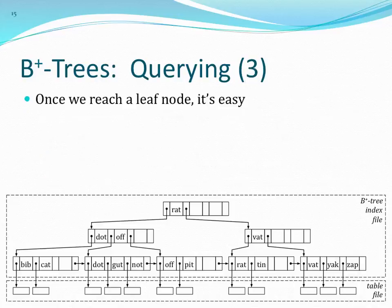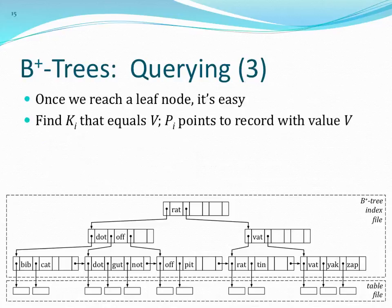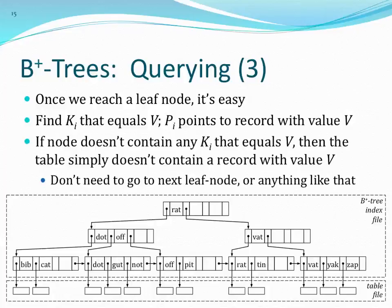Once we reach a leaf node, we just search through it until we find the entry we care about. Once we find it, we have the pointer to the tuple, and then we resolve that to get the tuple itself.